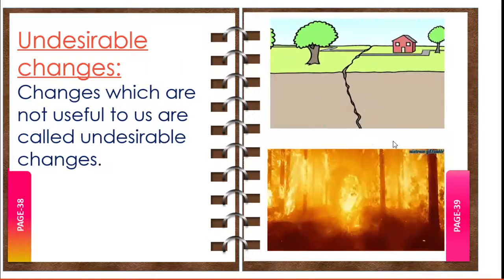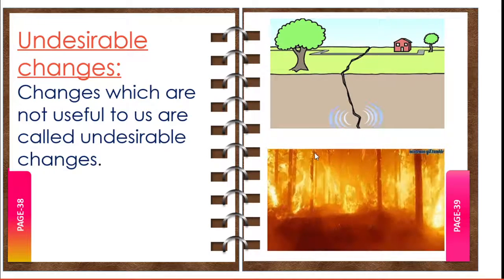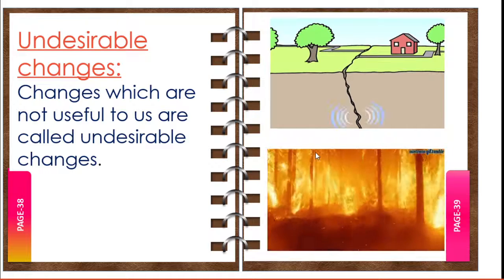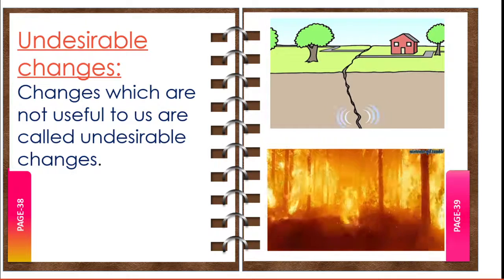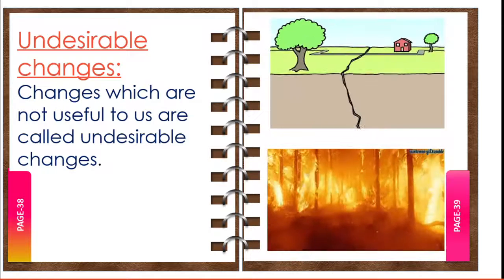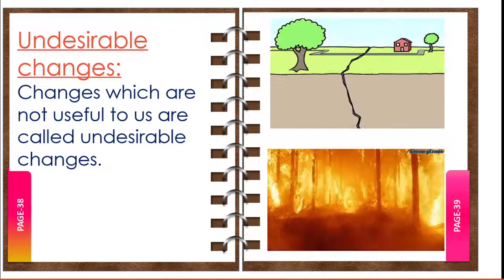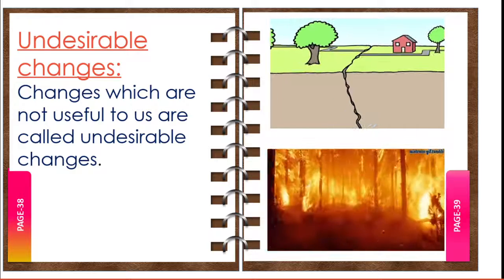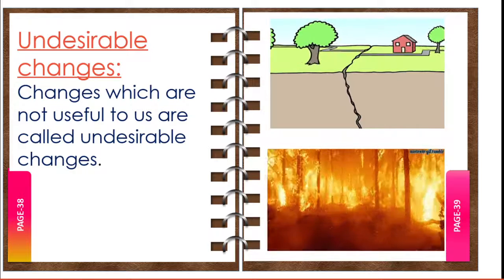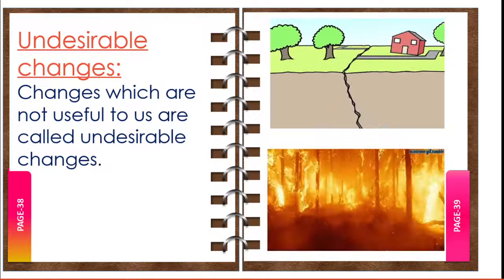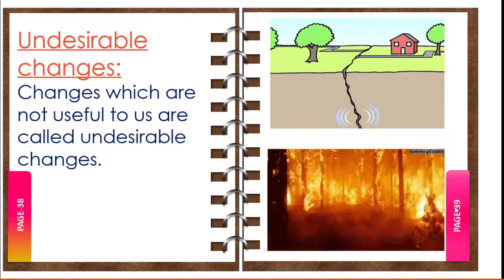Some changes are harmful to us and are called undesirable changes. Rusting of iron is a harmful change as it damages iron objects, so we try to prevent it. The various methods to prevent rusting are painting, galvanization, and applying chromium metal. Changes which are not useful to us are called undesirable changes.